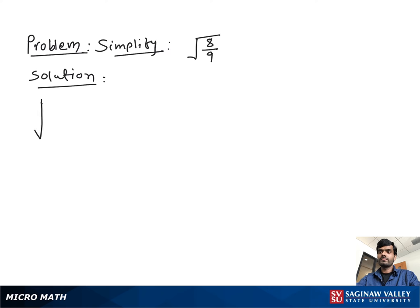Simplify square root of 8 over 9. So what we do first, we separate the square root between numerator and denominator. We can write square root 8 over square root 9.